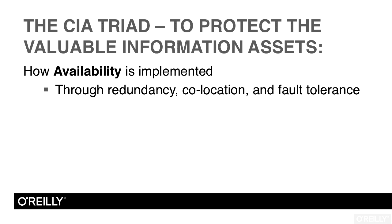Suppose I have a database in Oshkosh and I want to make sure it's highly available. In case my copy of the database in Oshkosh fails, a good idea is to make a second redundant copy and store it in Schenectady. That way, if my copy in Oshkosh fails, I can simply roll over and read the data out of my Schenectady copy of the database.